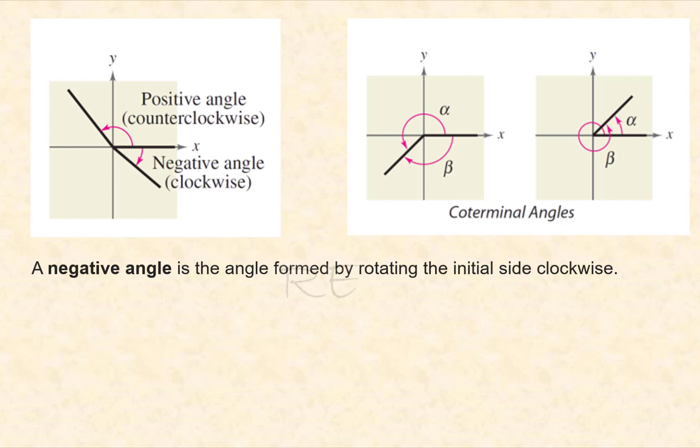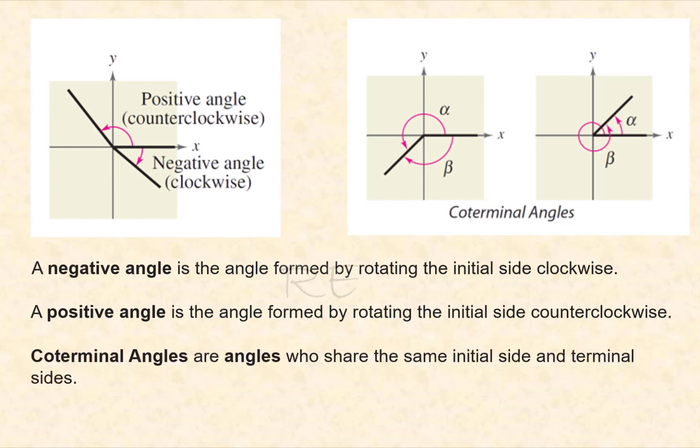A negative angle is an angle formed by rotating the initial side clockwise. A positive angle is the angle formed by rotating the initial side counterclockwise. Coterminal angles are angles who share the same initial side and terminal sides.